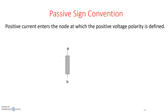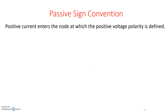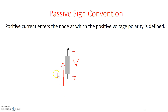Another example: if we define that the current is flowing through an element in this direction, we're basically suggesting that the voltage polarity is positive on the top and negative on the bottom. And if we define the voltage as positive on the bottom and negative on the top, we're defining that the current flows from the bottom node B to node A. This way of indicating voltage and current polarities is called passive sign convention.